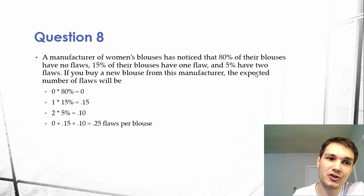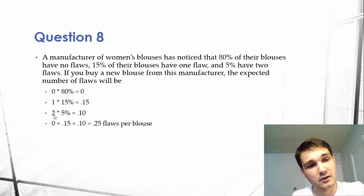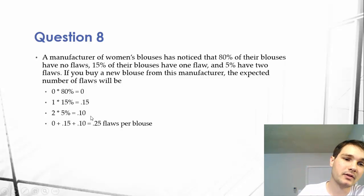Then we have a 5% chance of having two flaws, which will go down here. So 2 times 5% equals .10. That's one of our expected values.